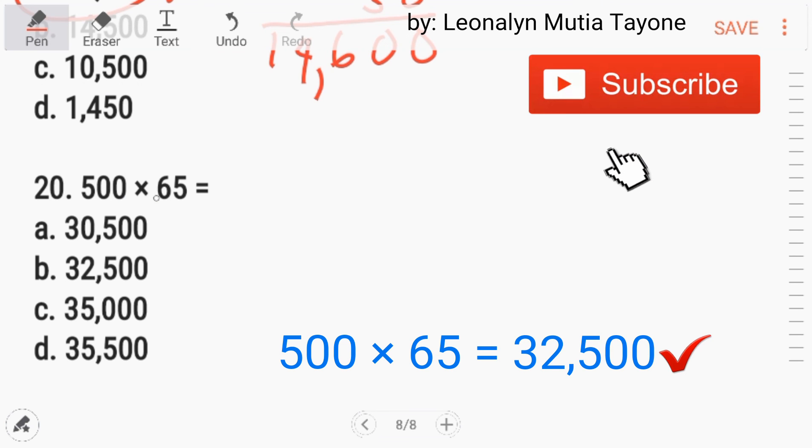Next, number 20, 500 times 65. So 65 times 500. Mamaya na yung dalawang 0. Ito lang ang multiply mo. So this is 25, 30, 32. Bring down mo yung dalawang 0. And the answer is 32,500, Letter B.